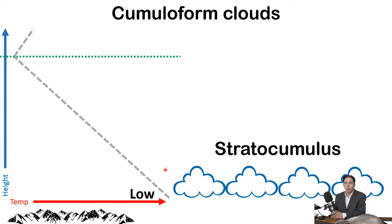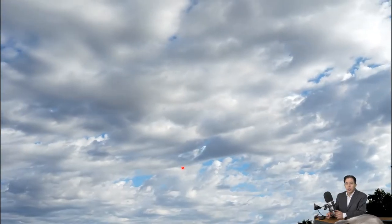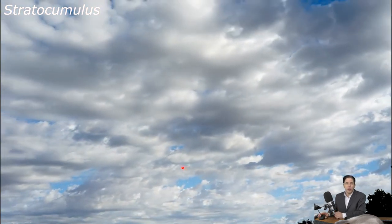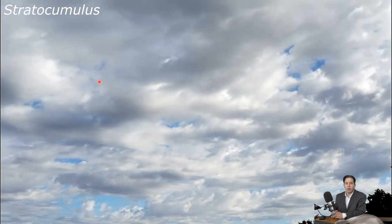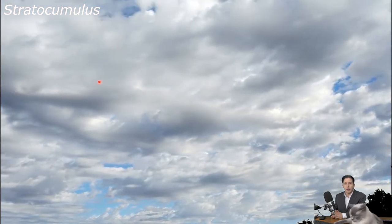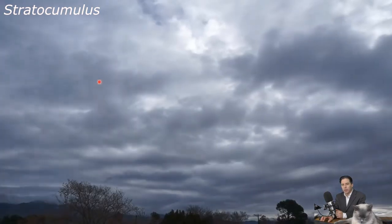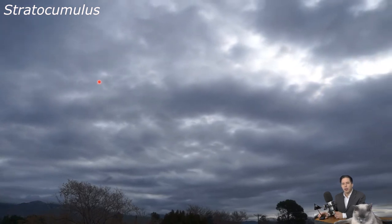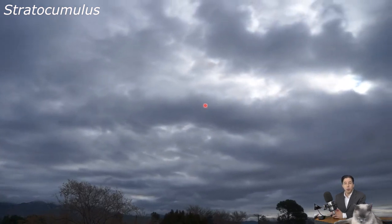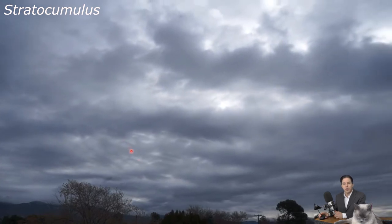There's one more type of cumuliform cloud. If I have a single low puffy cloud, I call that cumulus. But if I have so many cumulus clouds that they end up touching each other, it gets its own name: stratocumulus. We don't get a lot of stratocumulus in New Mexico, but here you notice everything in the scene is a puffy cloud, with so many that they're almost touching each other and we can barely see the sky. If I pulled out one of these by itself we'd call it cumulus, but altogether this is called stratocumulus.